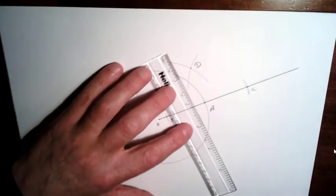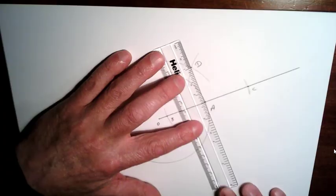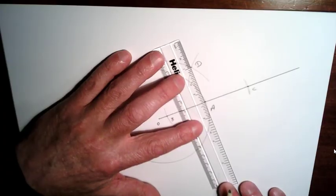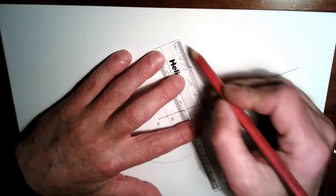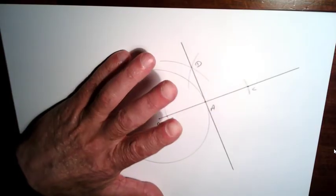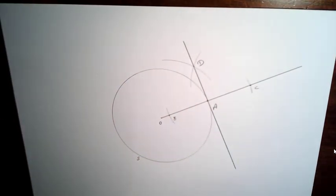What we're going to do now is just connect up D to A. And that will be our tangent. So that's our tangent to our circle S through point A.